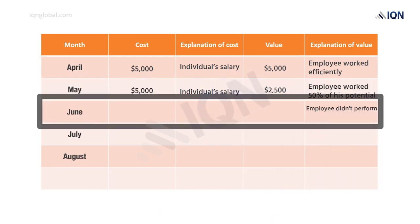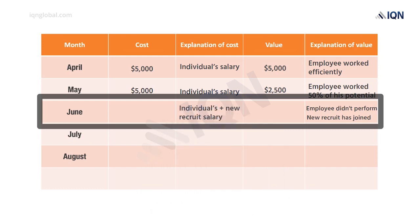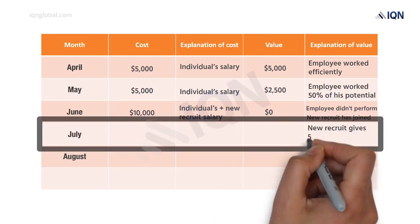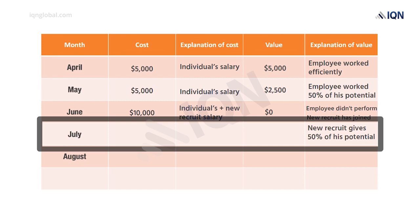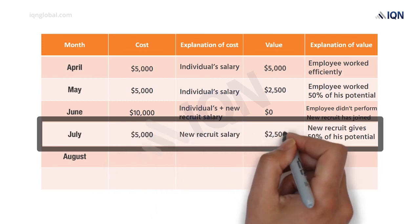In June, the existing employee did not perform at all. The new recruit also joined in June but did not contribute any value. So the cost to the organization in June was the salary of two persons: $5,000 plus $5,000 equals $10,000, but the value received during June is zero. In July, the new recruit could contribute 50% of the optimum level, so the cost to the organization was $5,000 and value was only $2,500.